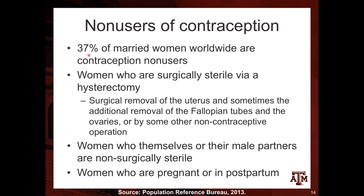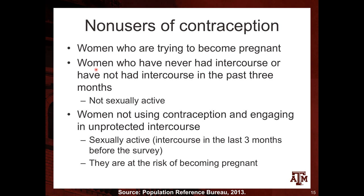There are other subgroups of women who are non-users of contraceptive methods. Some are women trying to become pregnant but not yet pregnant, so they are not using any form of contraception. We also have women who have never had intercourse or have not had intercourse in the past three months — these women are considered not sexually active and don't have a chance of getting pregnant. Finally, there are women not using contraception who are engaging in unprotected intercourse: they are sexually active, had intercourse in the last three months, but do not intend to get pregnant and are therefore at risk.